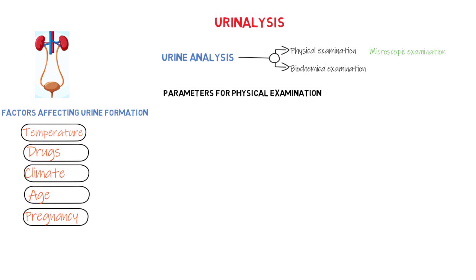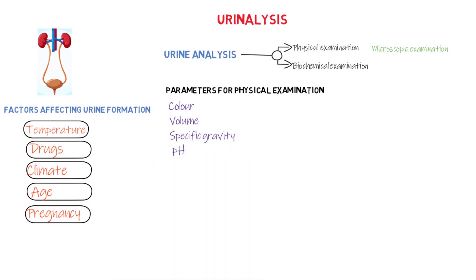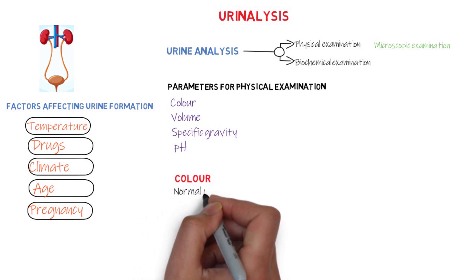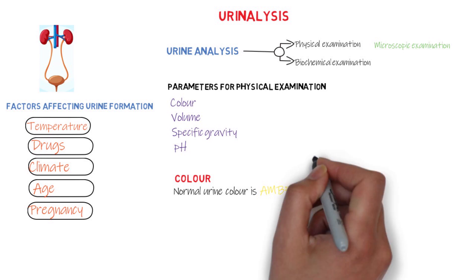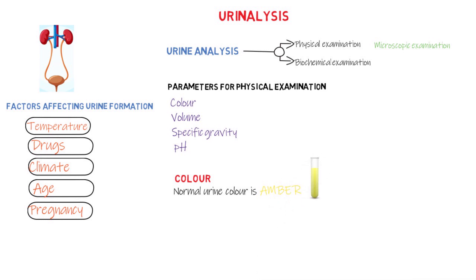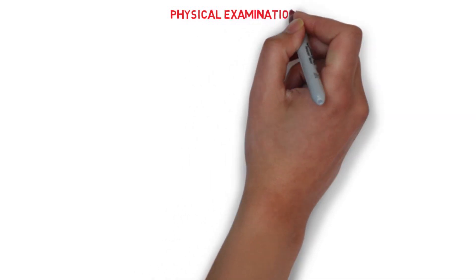In physical examination of urine, the color, volume, specific gravity, and the pH of the urine is assessed. Normally, the color of urine is amber. However, the presence of entirely different colors may be indicators for certain health conditions.